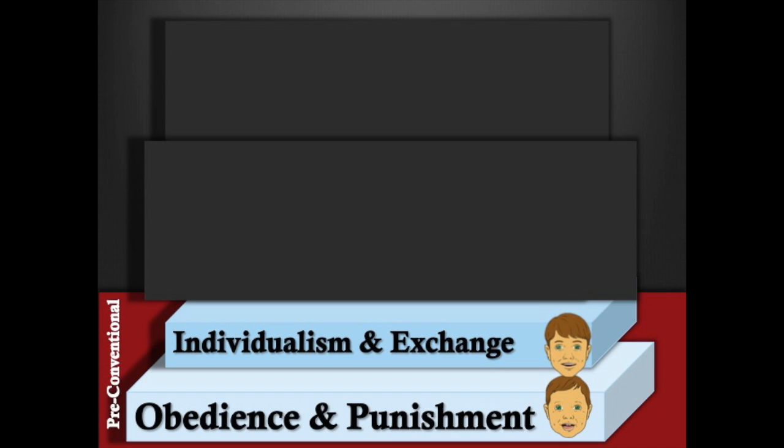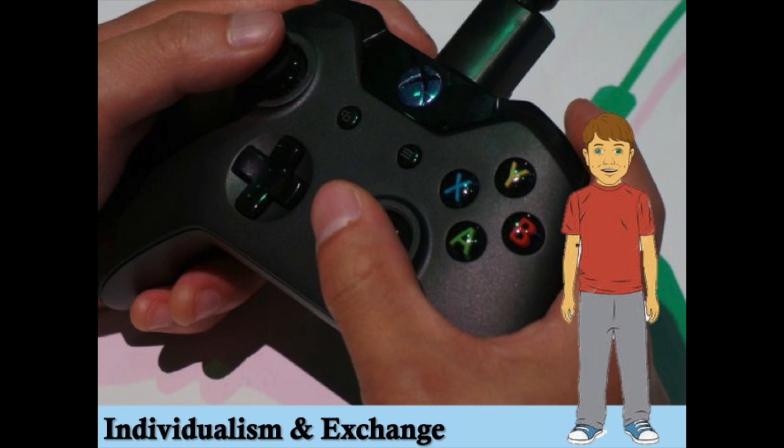Stage two: individualism and exchange. Individuals are focused on fulfilling their own self-interest while acknowledging that different people have different views. Bobby arrives home after school, ready to relax, and says he's going upstairs to play his video game. His mom tells him he has to show her his finished homework before he can play. Here, Bobby and his mother are experiencing an exchange.